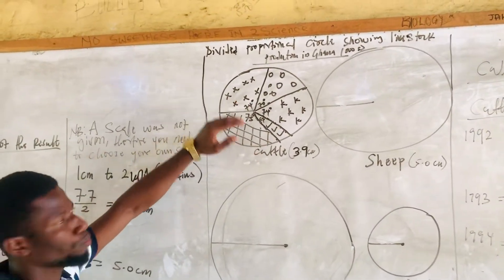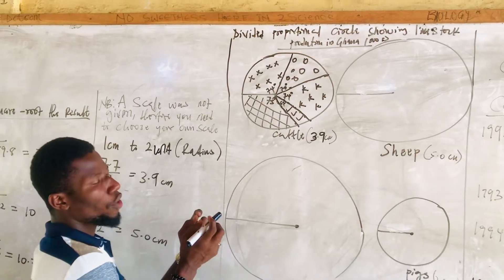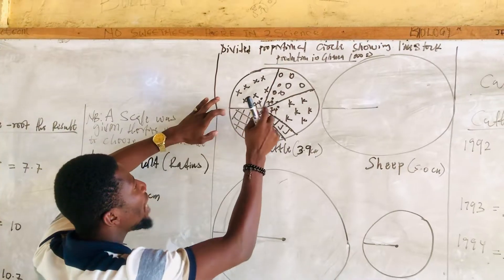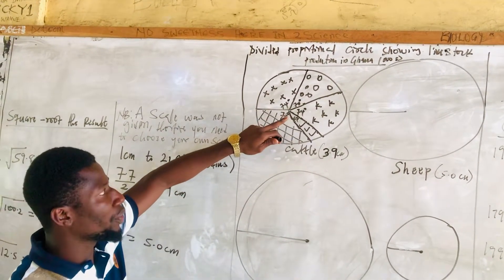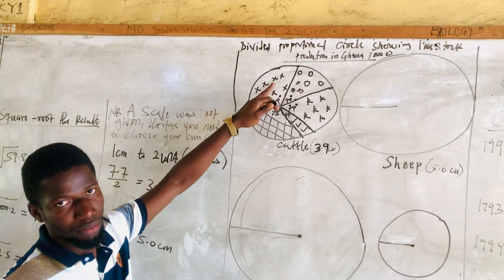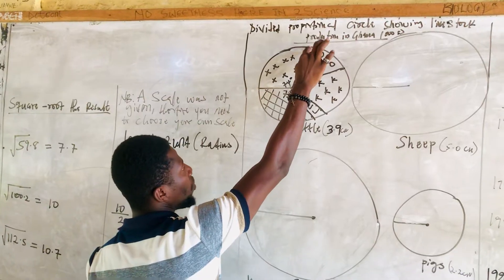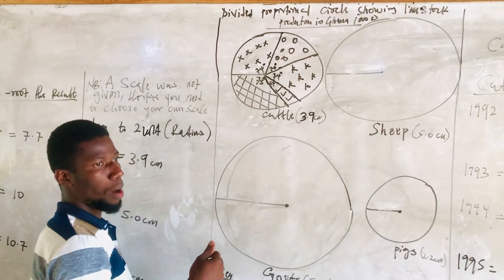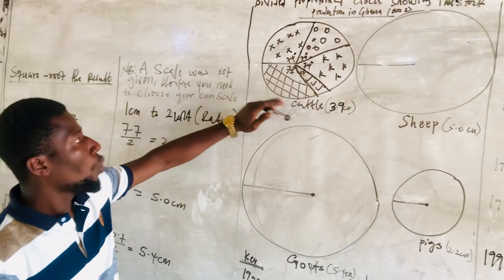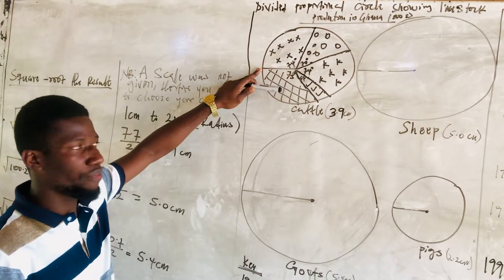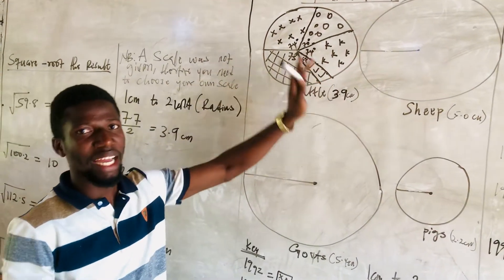Per our calculated sectors, we draw them on the cattle circle. For 1992, we had 74 degrees — we place our protractor on the radius line, measure 74 degrees, mark the point, and join it to the center. We indicate 74 degrees as 1992 and give it a shade. We do the same for 1993 at 67 degrees, starting from where the previous sector ended. We follow the same procedure for all sectors. When you reach the last year, 1996 at 75 degrees, it closes back to the starting line because all sectors sum to 360. Shade each year with a different key.